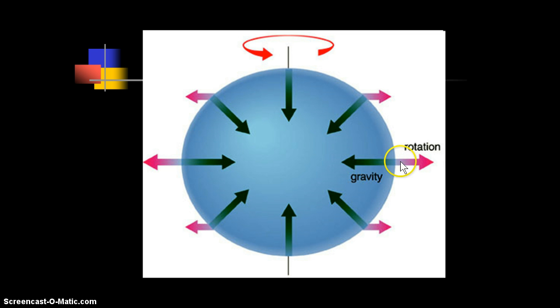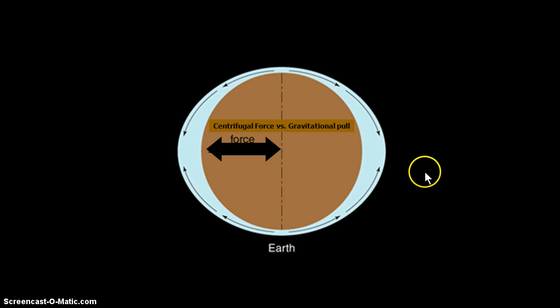But gravity fights that, counteracts it, if you will. So instead of all the ocean piling up on the outside of the ocean at the equator, essentially, and having no oceans as we go towards the poles, gravity counteracts that spinning.